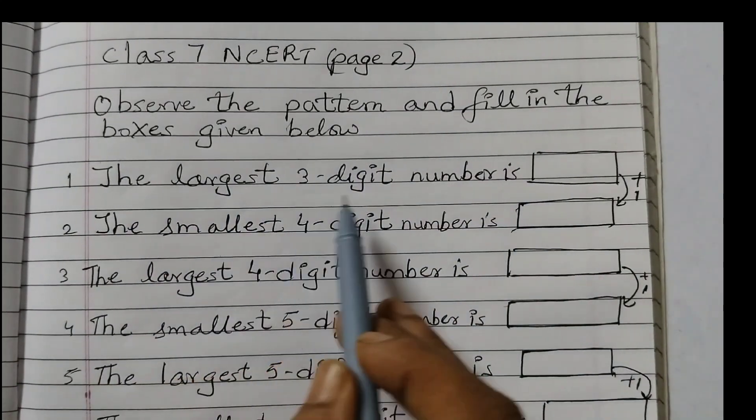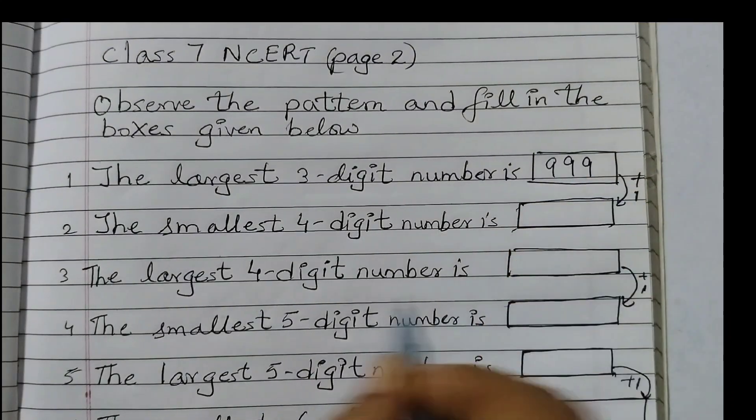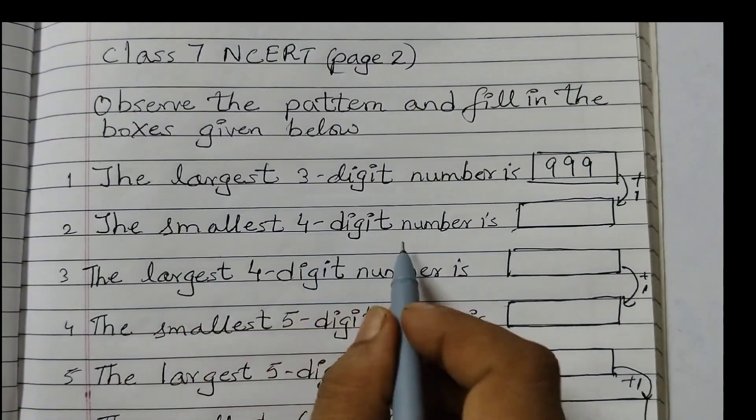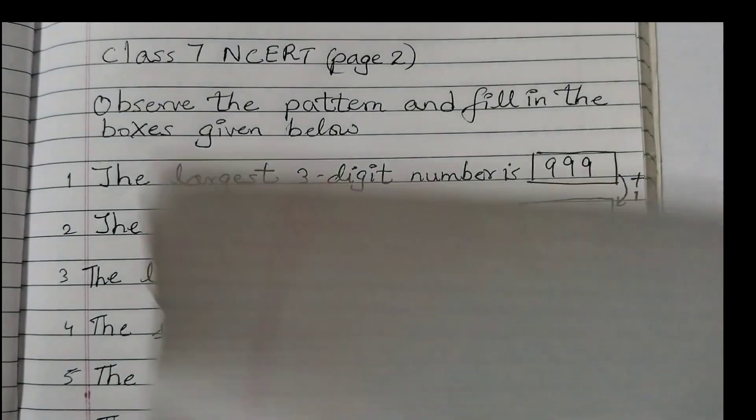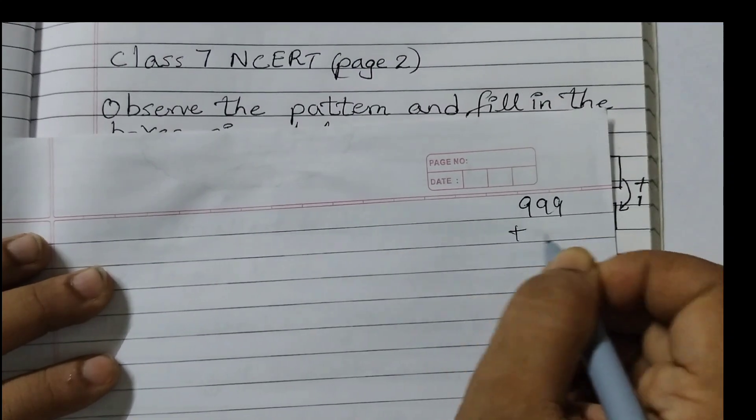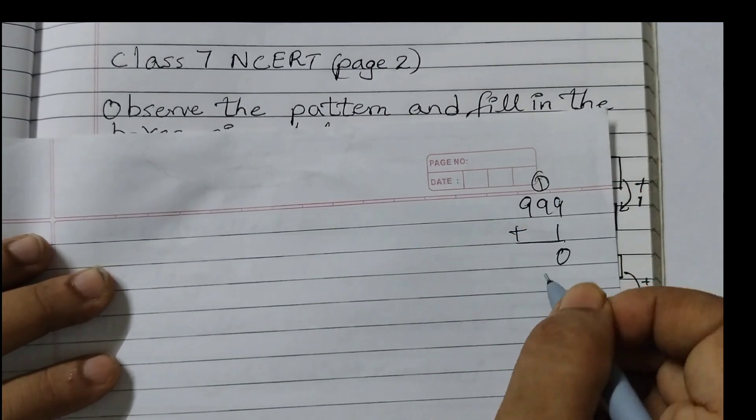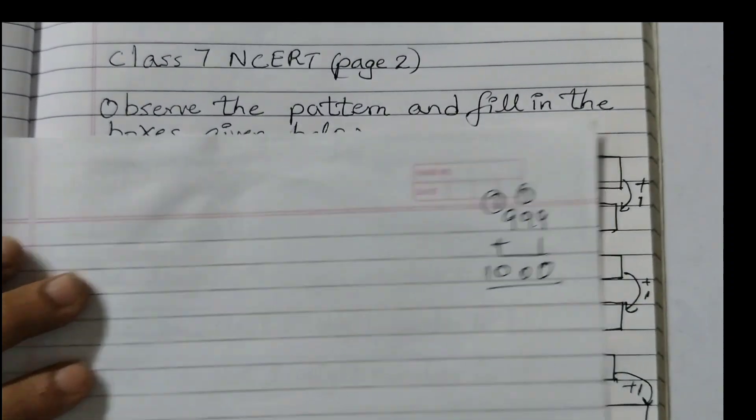The largest 3 digit number is 999. The smallest 4 digit number is, we just need to add 1. So when we add 1, 999 plus 1, 9 plus 1, 10, 10, 10. So we get 1000.